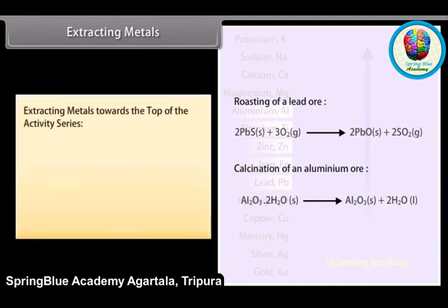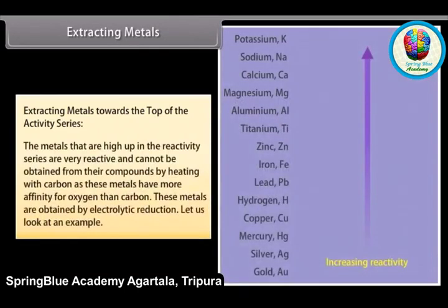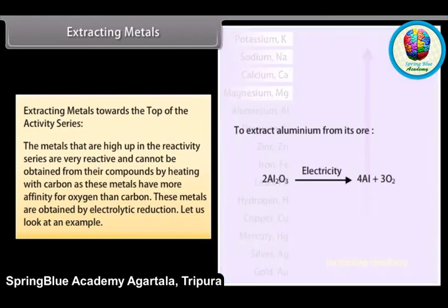Extracting metals towards the top of the activity series. Metals high up in the reactivity series are very reactive and cannot be obtained from their compounds by heating with carbon, as these metals have more affinity for oxygen than carbon. These metals are obtained by electrolytic reduction.